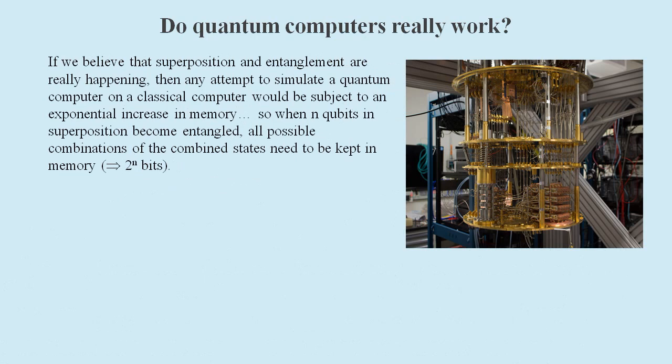If superposition and entanglement were really happening, then we would struggle to simulate a quantum computer on a classical computer. This is because to simulate n entangled qubits we would need 2 to the power n bits of memory in order to represent all possible combinations of the combined states.